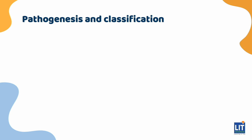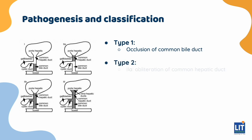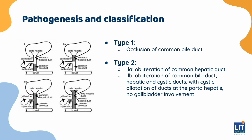Another way to classify biliary atresia is according to which level of the biliary lumen is affected. Type 1 is occlusion of the common bile duct. Type 2a is obliteration of the common hepatic duct. Type 2b is obliteration of the common bile duct, hepatic and cystic ducts, with cystic dilation of ducts at the porta hepatis and no gallbladder involvement. Type 3 is obliteration of the common hepatic and cystic ducts, as demonstrated in the image.